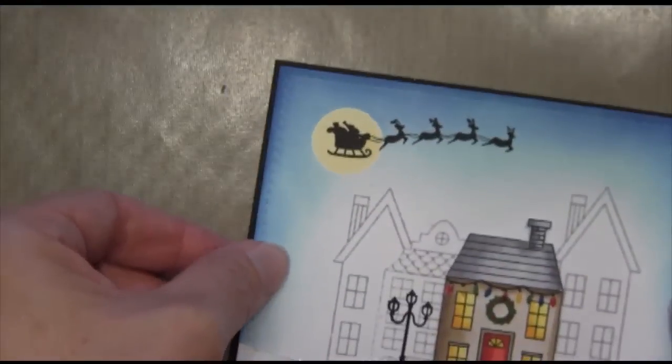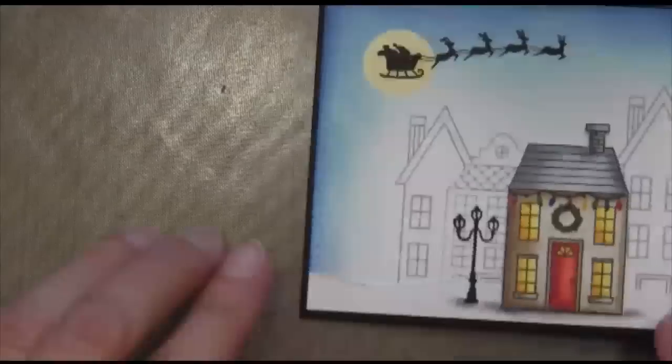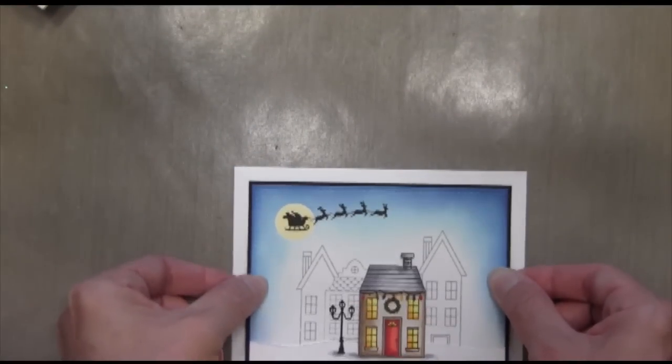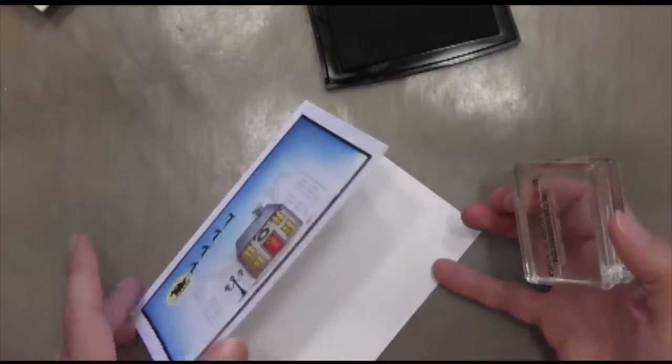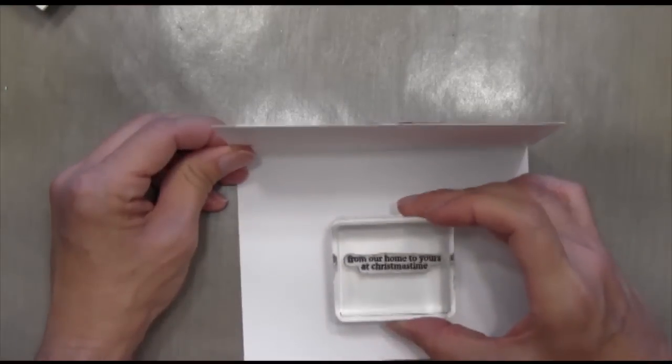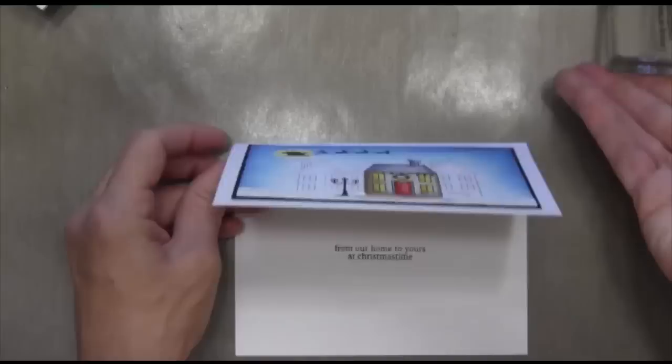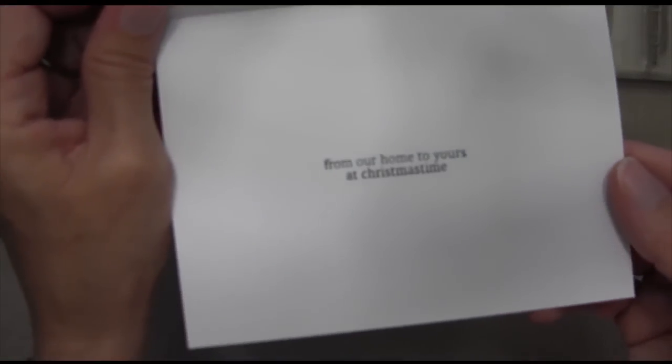I'm just adhering this panel to some black cardstock with about an eighth of an inch mat. Then I'm going to adhere that to my folded cardstock. There's also sentiments for the inside, from our home to yours at Christmas time, and so I stamped that on the inside.